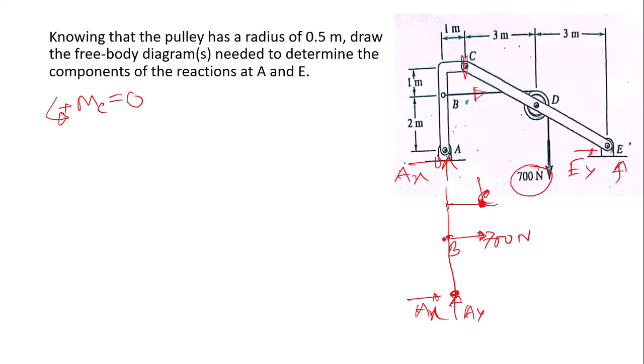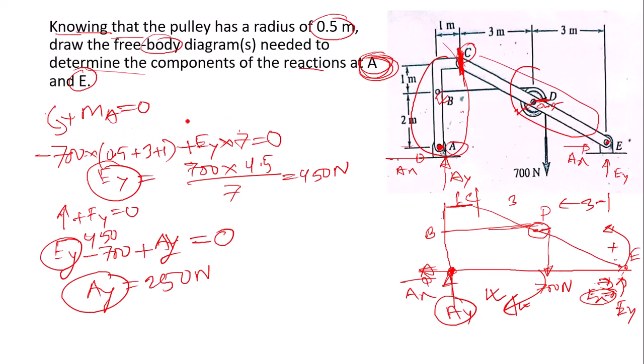Taking moment about C as positive: the 700 Newton force at B times distance 1, plus A_x times 3, minus A_y times 1 equals zero.